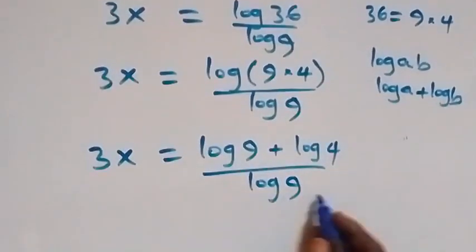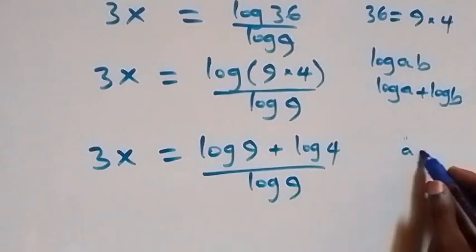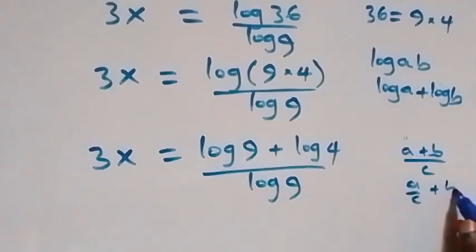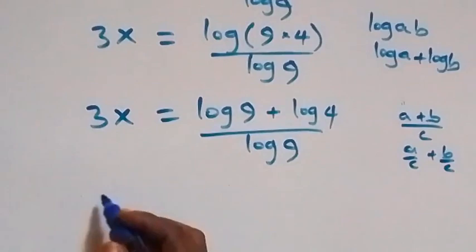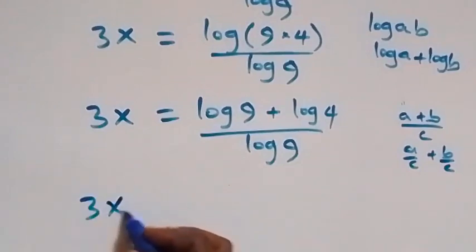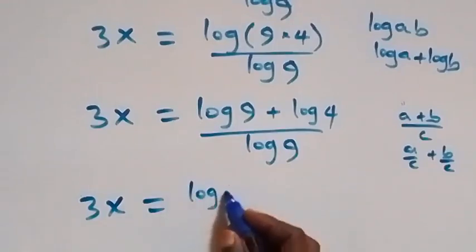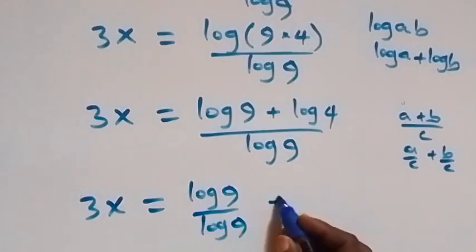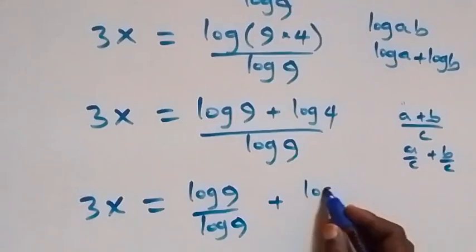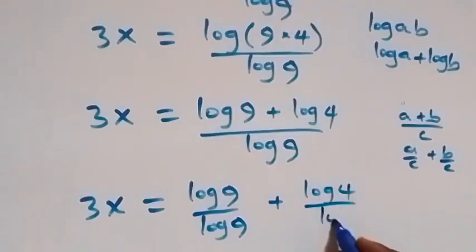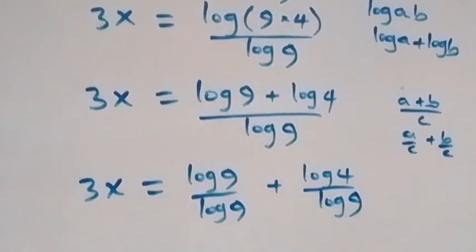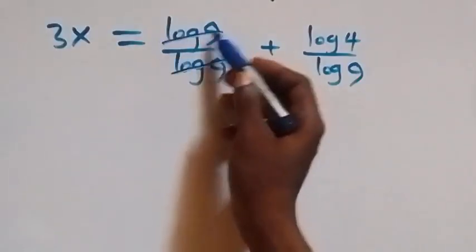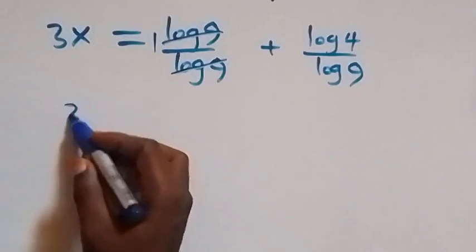We can also separate this fraction using the rule: (a plus b) over c equals a over c plus b over c. So what we have becomes 3x equals log 9 over log 9 plus log 4 over log 9. The log 9 terms cancel each other, leaving 1, so this becomes 3x equals 1 plus log 4 over log 9.